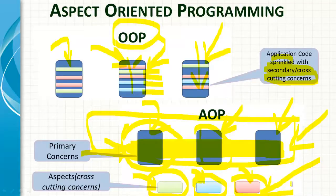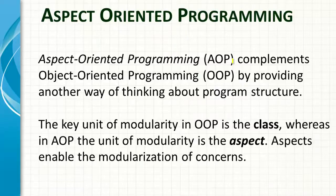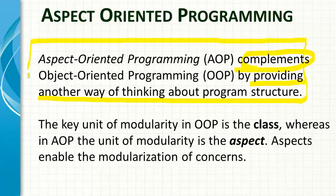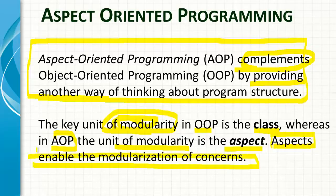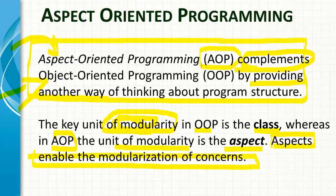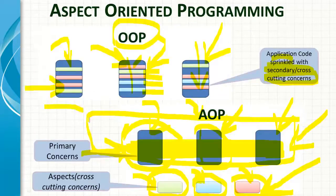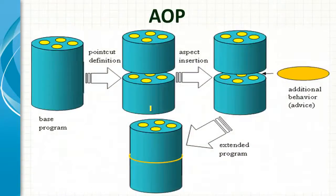You divide your code into two aspects: primary concerns and secondary concerns. AOP is not something that replaces OOP — it complements OOP by providing another way of thinking about program structure beyond just class, object, properties, behavior, data, and methods. The key unit of modularity in OOP is the class, whereas in AOP the unit of modularity is the aspect. The aspect enables the modularization of cross-cutting concerns.